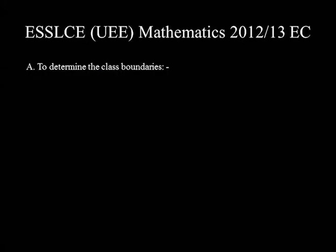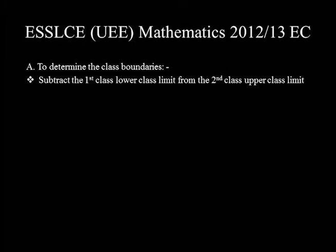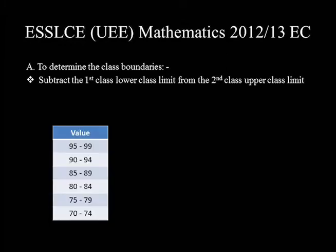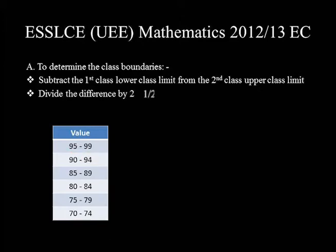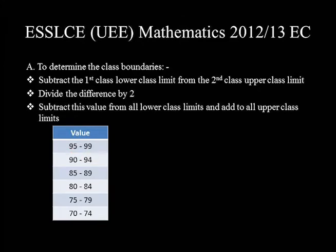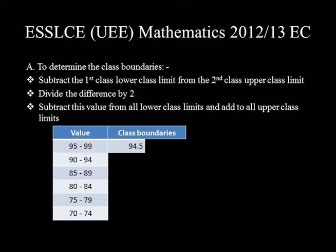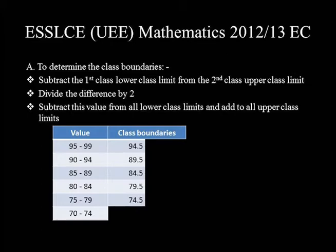The following are the steps for determining class boundaries of data presented in such descending order. Step 1: Subtract the first class lower class limit from the second class upper class limit. That's 95 minus 94, which is equal to 1. Step 2: Divide the difference by 2. 1 divided by 2 is equal to 0.5. Step 3: Subtract the value from all lower class limits and add to all upper class limits. Subtract 0.5 from all lower class limits: 95 minus 0.5 is 94.5, 90 minus 0.5 is 89.5, 85 minus 0.5 is 84.5. Following a similar pattern, we find 79.5, 74.5, 69.5.